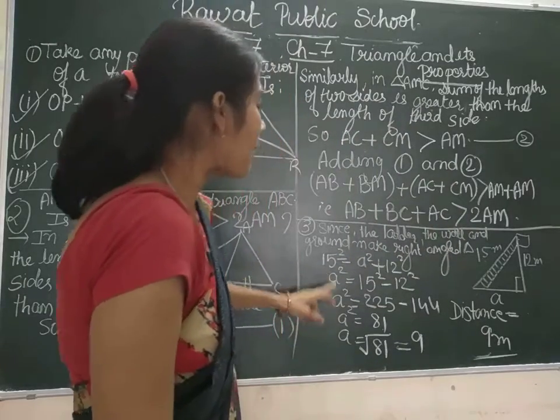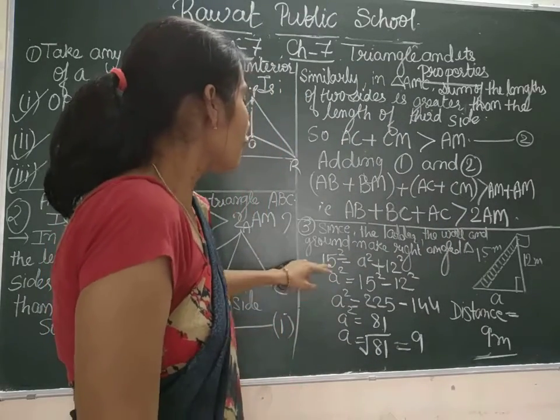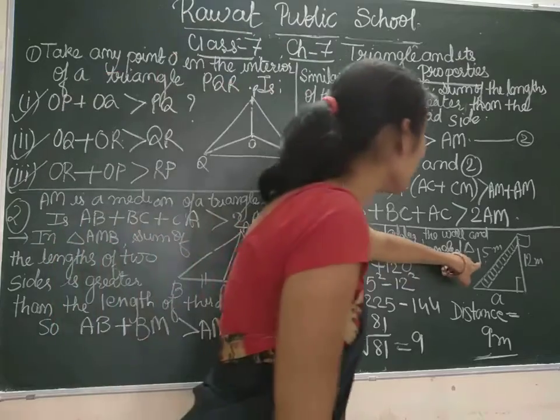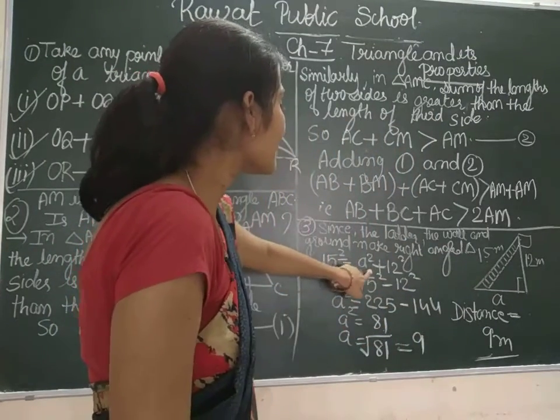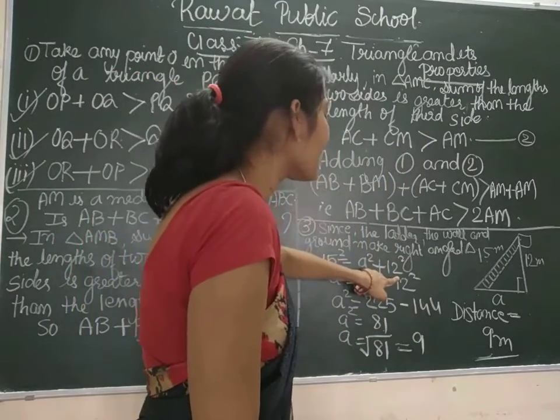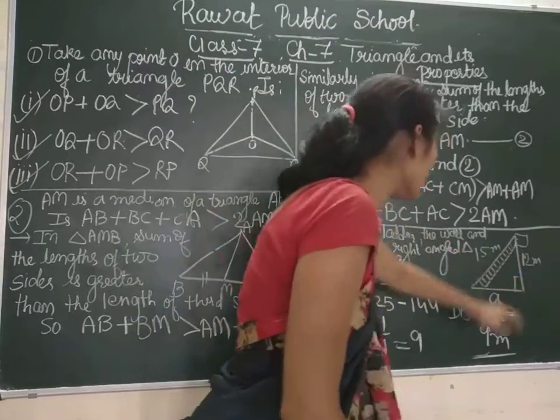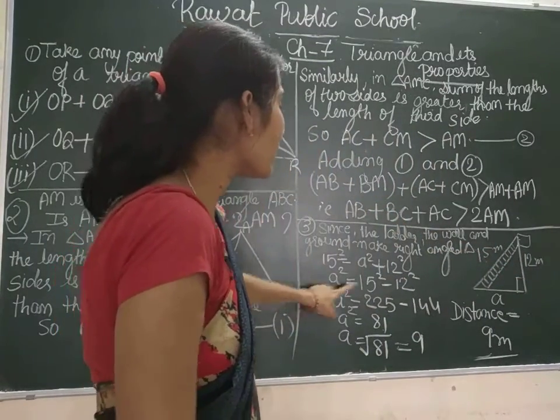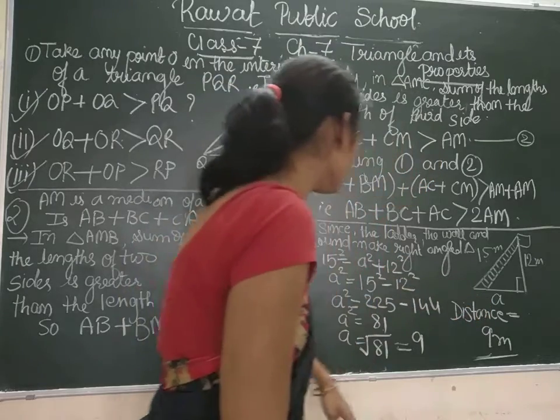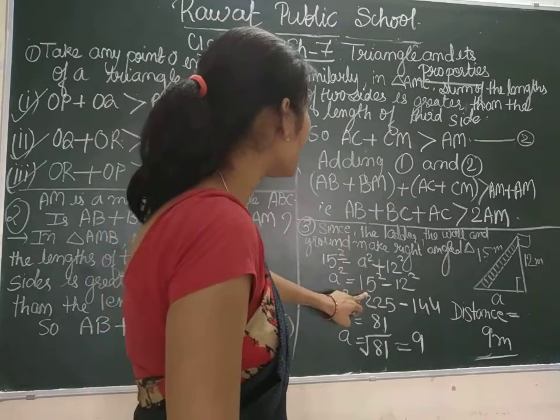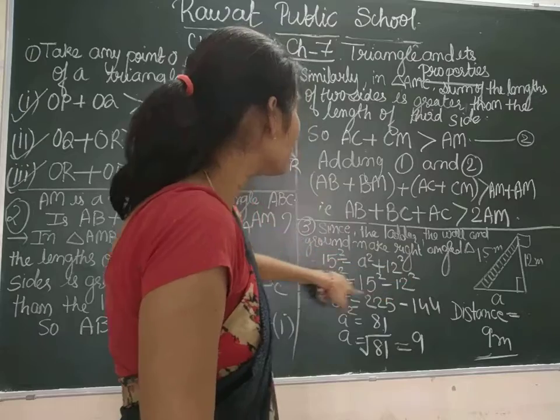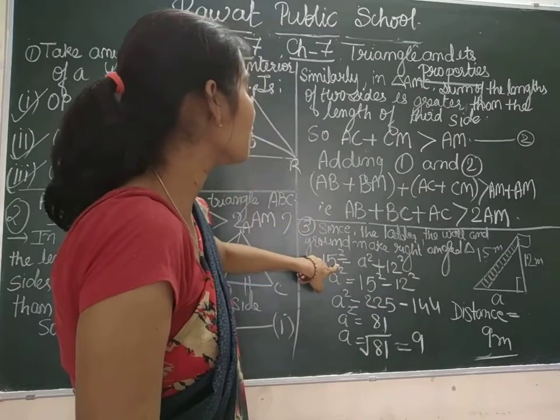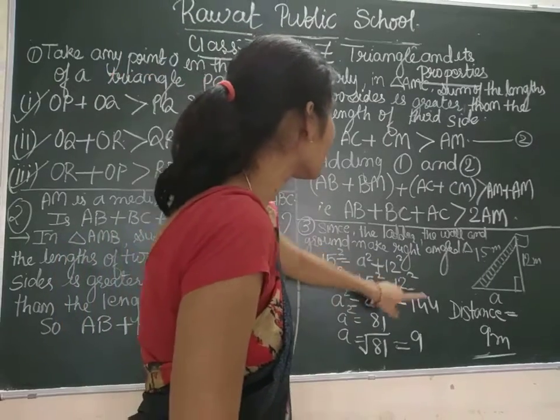By Pythagoras theorem, 15 square, that is hypotenuse square, is equal to AC square plus 12 square, that is BC square. So A square, which is the wall distance, A square is equal to 15 square. This square will shift from right hand side to left hand side to 15 square minus 12 square.